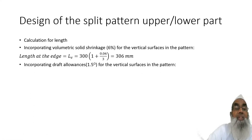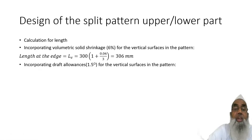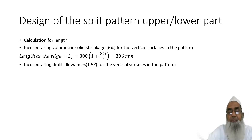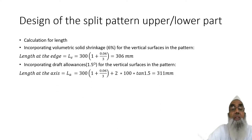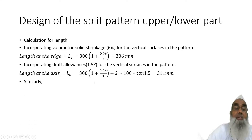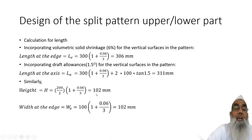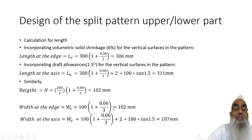We need to incorporate a draft allowance of 1.5 degrees to the vertical surfaces. To give that draft, we need to make the vertical surfaces slanted. Therefore, the length at the axis will be calculated including the draft. Similarly, we can calculate the height of the pattern, the width of the edge, and the width at the axis.